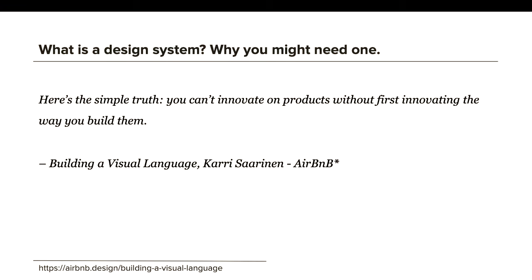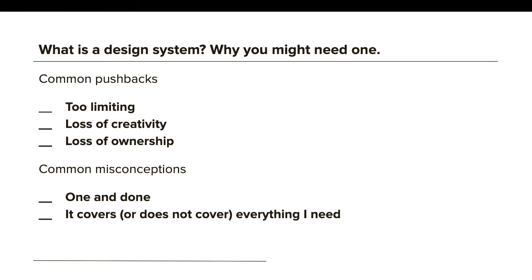Here's the simple truth: you can't innovate on products without first innovating the way you build them. There will be a lot of pushback — finding common agreement on something as charged as creative arts, content design and code is really, really hard. People will be afraid: it's too limiting, they lose creative ownership, they have to talk to others. There are common misconceptions — this can never be a one-and-done effort. You need to see it as a garden: the weeds are going to take over, you need to pamper and prune, and there needs to be a head gardener after the big shots have left. A good design system will cover everything you need to get started, but it won't do the whole job for you.